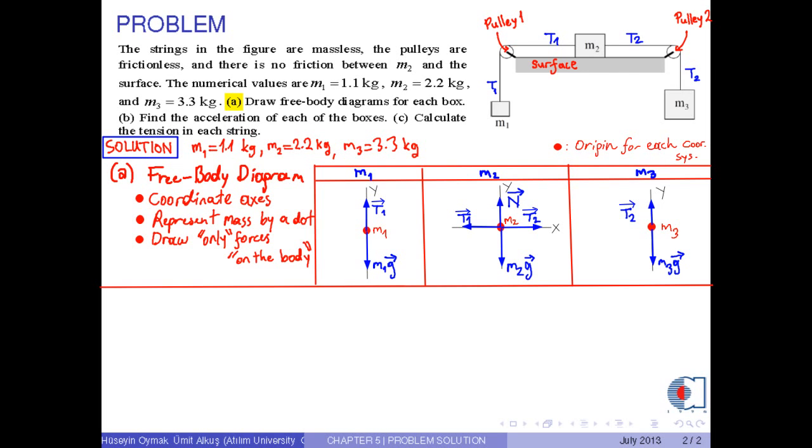As the final step to draw the free body diagram, draw acceleration vector separately, that is, to not draw the acceleration vector on the body. Here, it is extremely important to choose the direction of the acceleration vector.